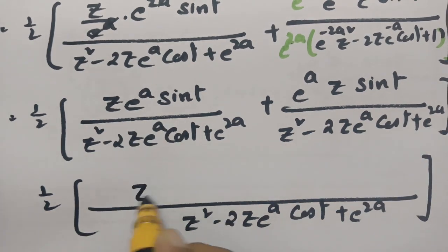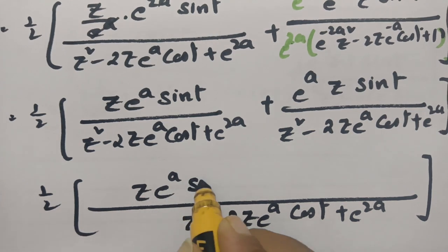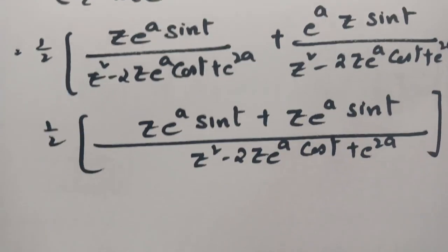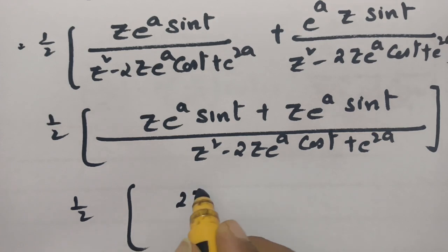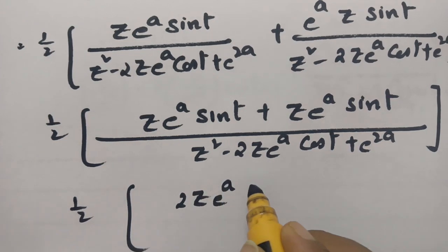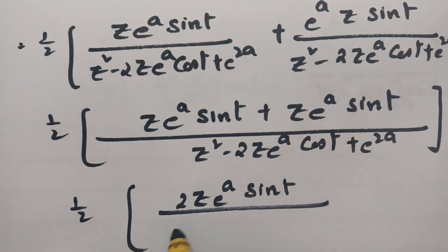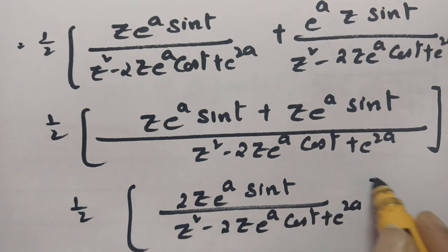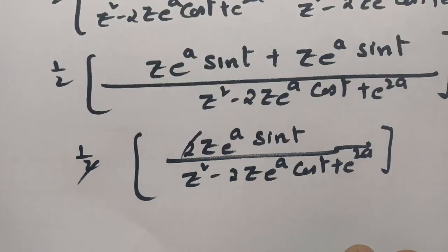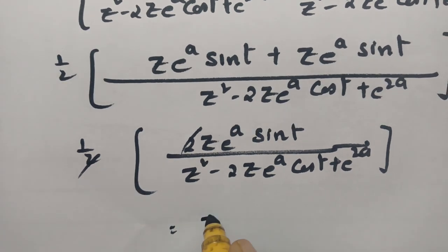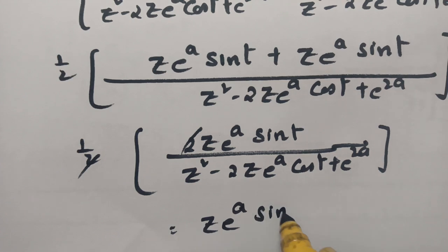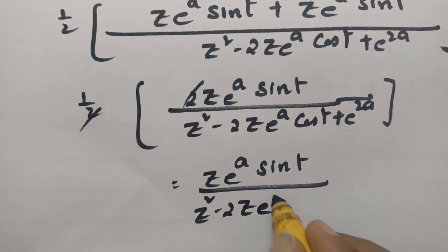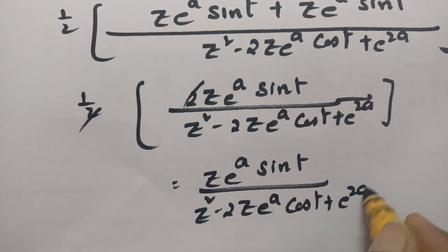And the numerators are also the same: z into e power a into sin(t), and here also z into e power a into sin(t). So now the value is half times of 2z into e power a into sin(t) divided by z square minus 2z e power a into cos(t) plus e power 2a. If I cancel the half, the final value will be z into e power a into sin(t) divided by z square minus 2z into e power a into cos(t) plus e power 2a.